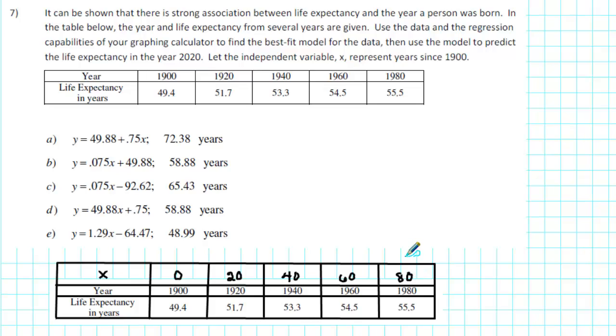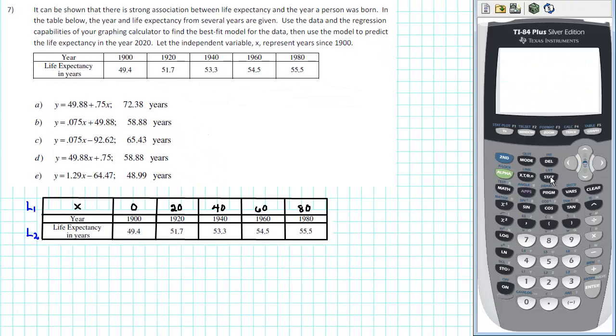Now we're ready to enter the data into our graphing calculator. We'll enter the values of x into L1 and the life expectancy in years into L2. First of all, go to STAT and then select number 1, EDIT. Enter the x values into L1 and the corresponding life expectancy into L2.